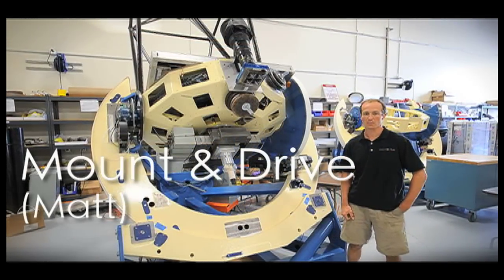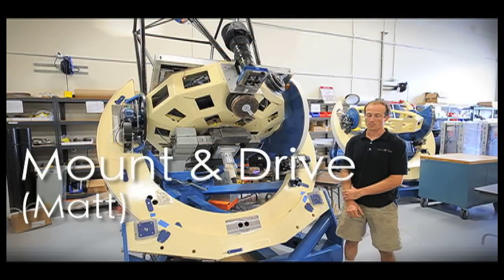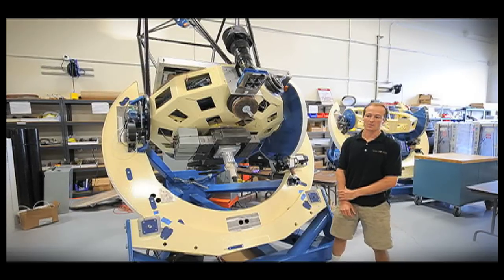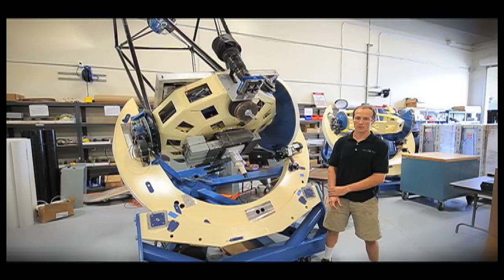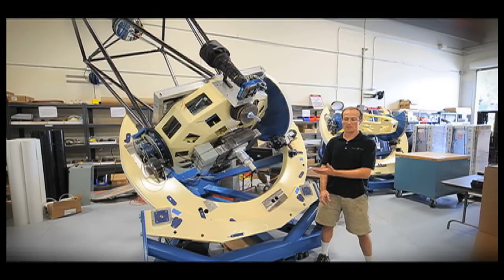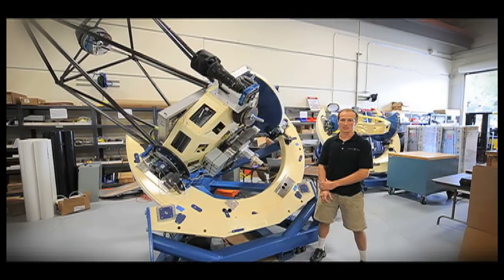We chose the equatorial searing mount because it's more compact, it has a higher resonant frequency, and that gives us the ability to move the telescope pretty quickly, stop at a target and have the thing settle down in less than a second.